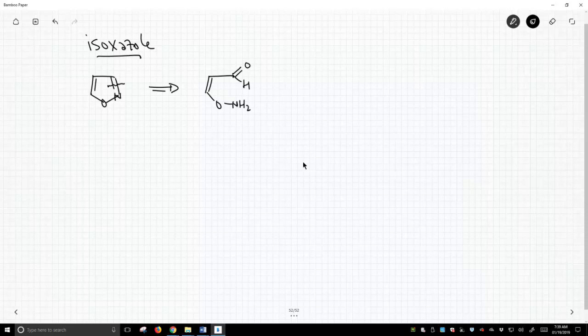So we can form that imine by reaction of this primary amine with that carbonyl compound. And this gets this piece over here a little more confusing. This is an enol or an enol ether.